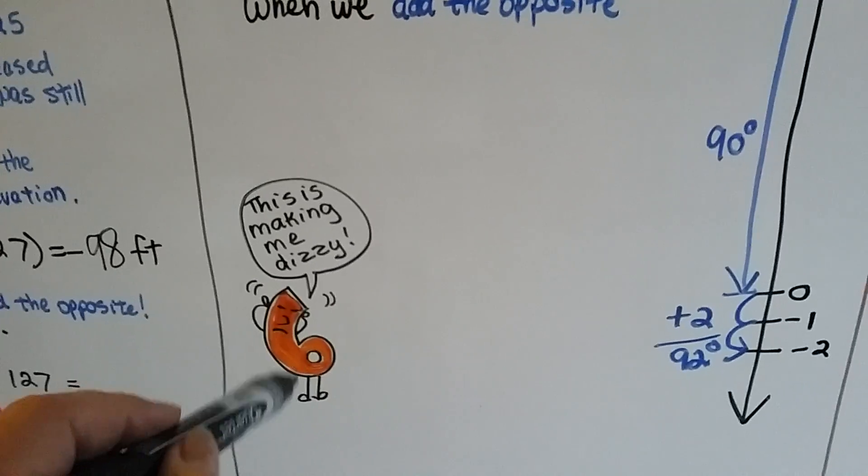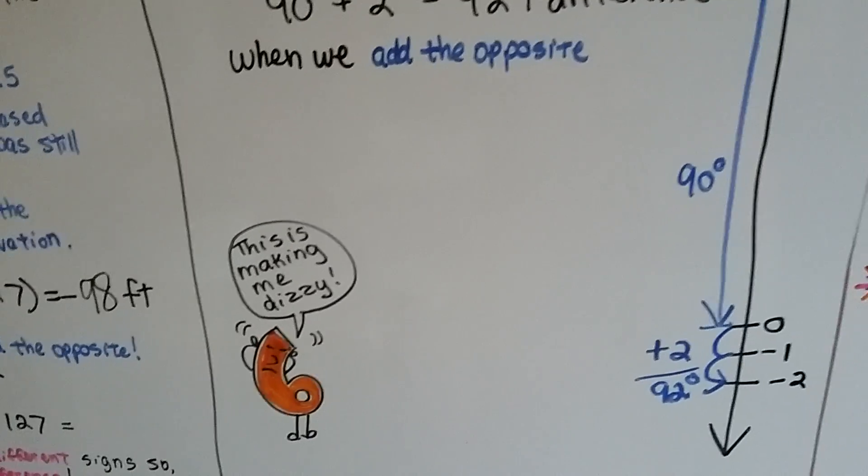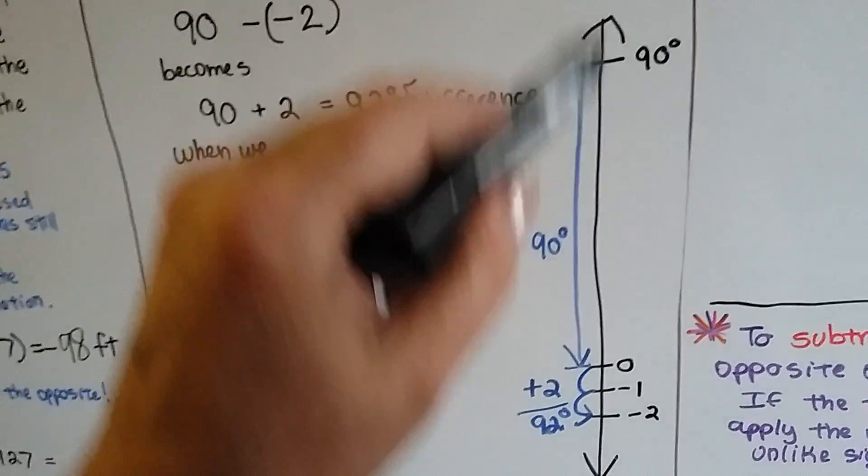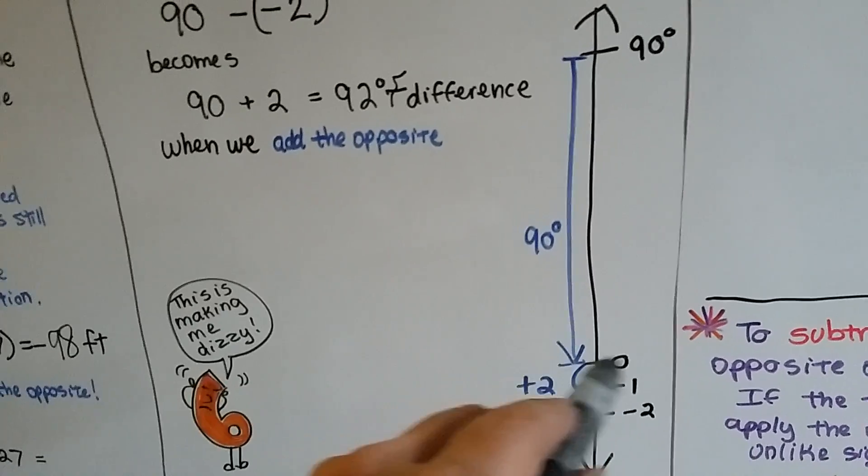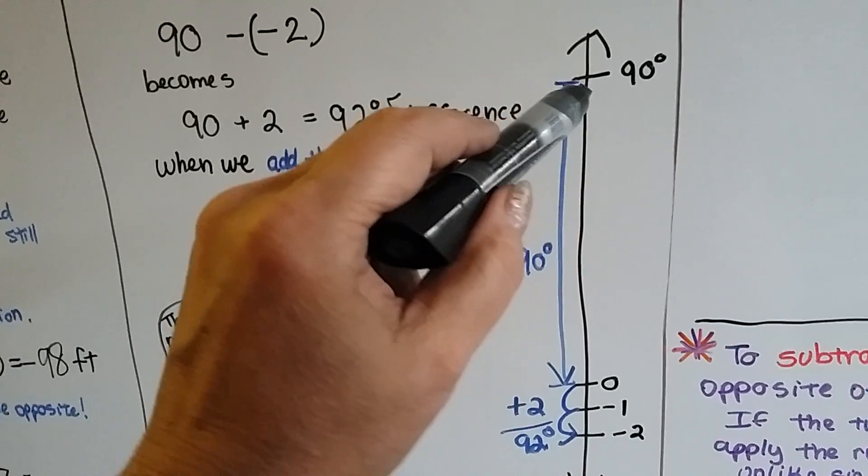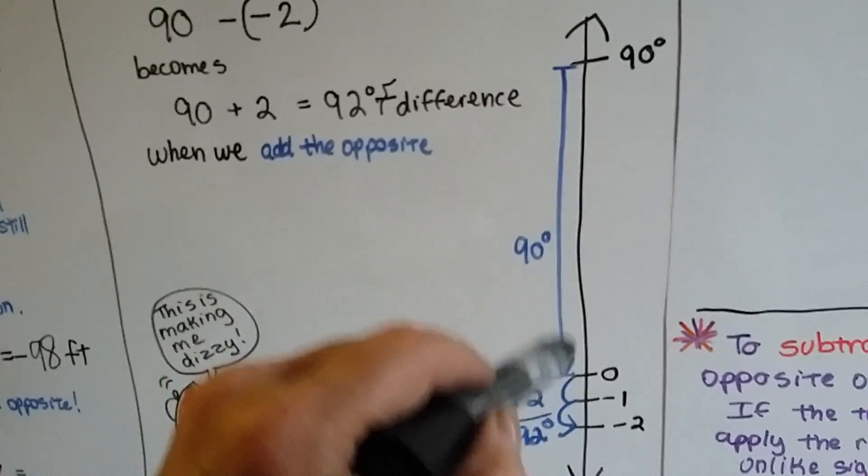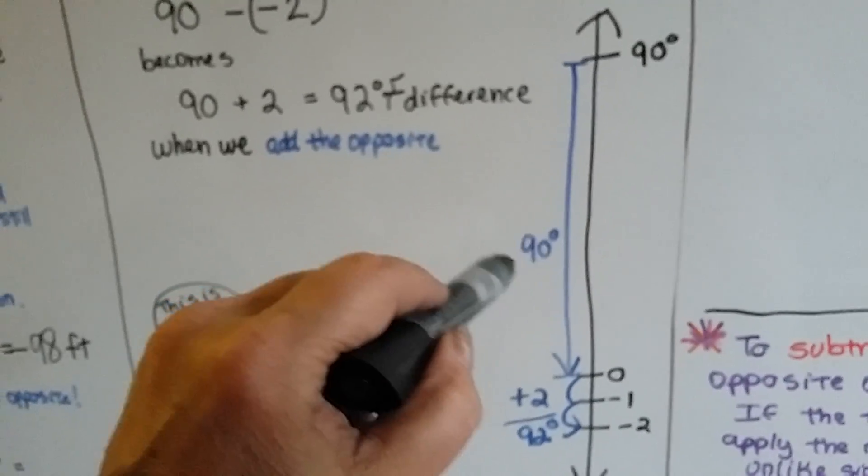Now, my little 6 is still dizzy from the last video, so we're going to help him out. Okay? So here's the temperature. Okay? Here's 0. And it was 90 degrees. So in between 0 and 90 degrees is 90 degrees. Right?